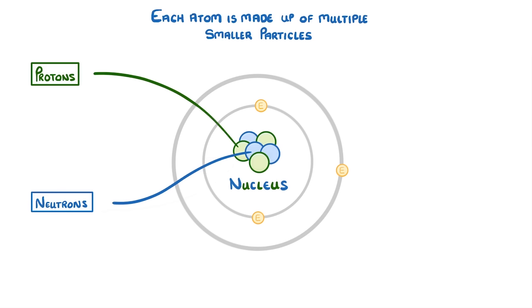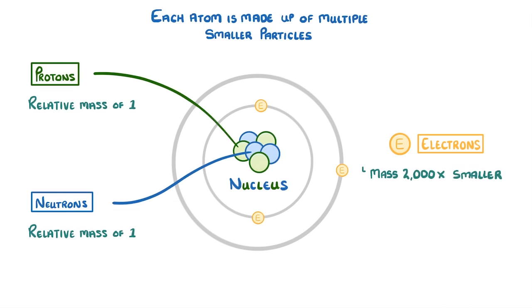Now, the most important thing to remember here is the structure of the atom that we've just been through, and also the relative mass and charge of each of the particles. The protons and the neutrons have the same mass, so we say that they both have a relative mass of one. Electrons, meanwhile, are comparatively tiny, and have a mass 2000 times smaller, which is often written as just very small, or sometimes even zero.